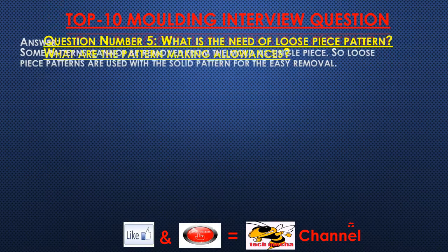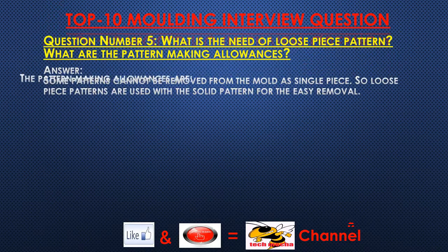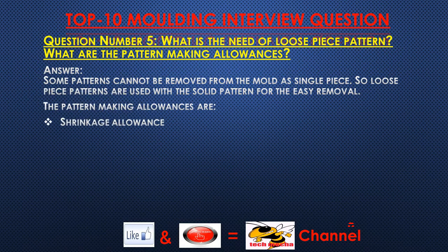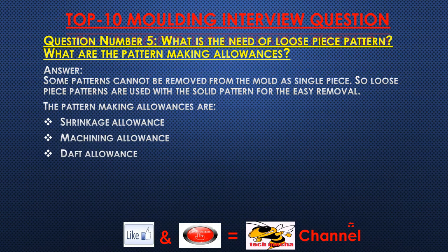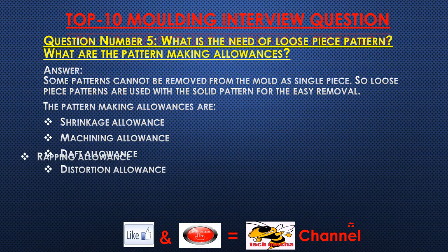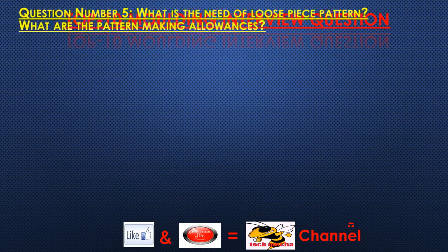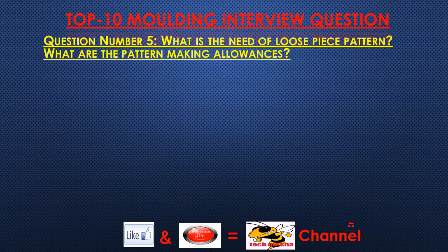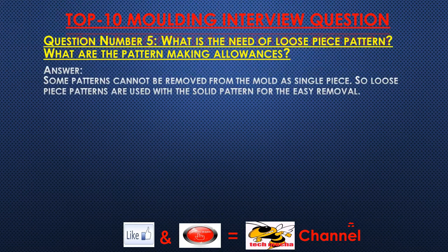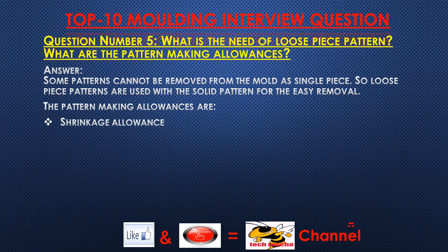Question number five: What is the need of a loose piece pattern? What are the pattern making allowances? Answer: Some patterns cannot be removed from the mold as a single piece, so loose piece patterns are used with the solid pattern for easy removal. The pattern making allowances are shrinkage allowance, machining allowance, draft allowance, distortion allowance, and warping allowance.